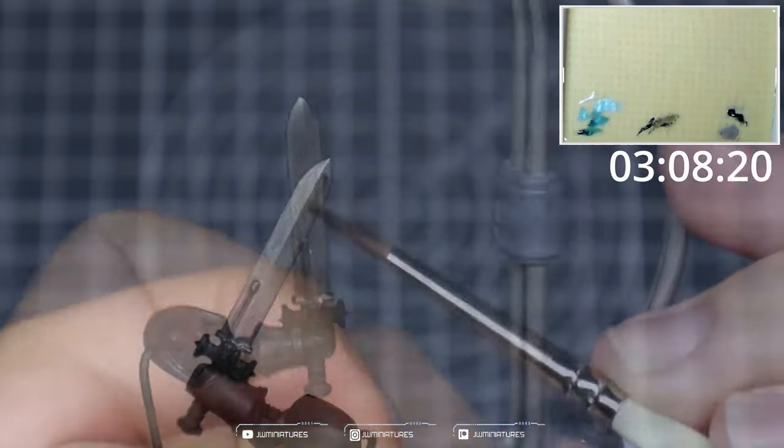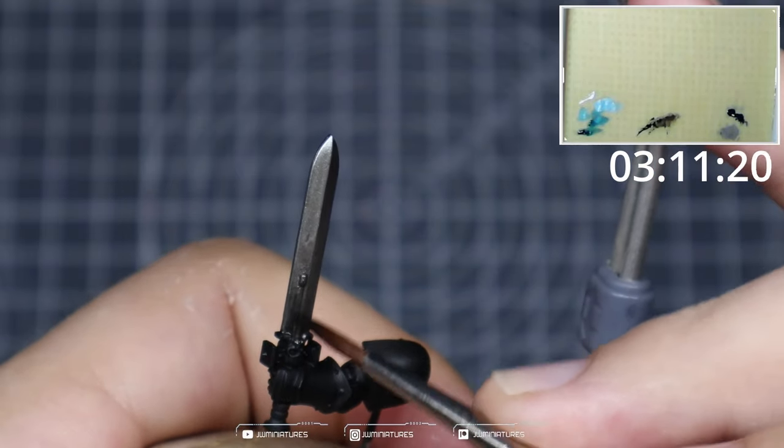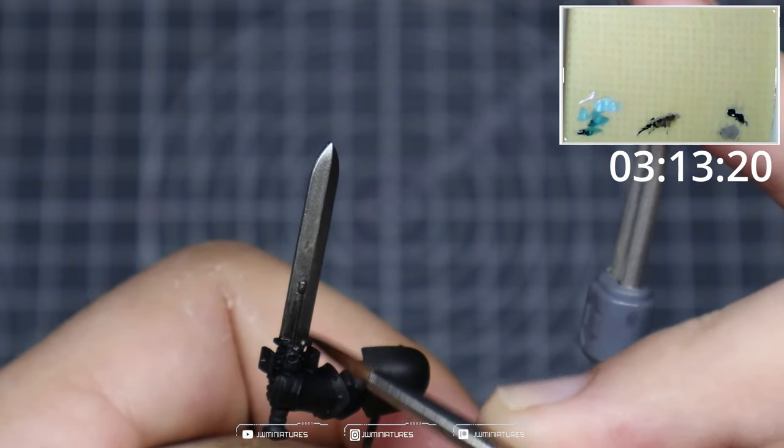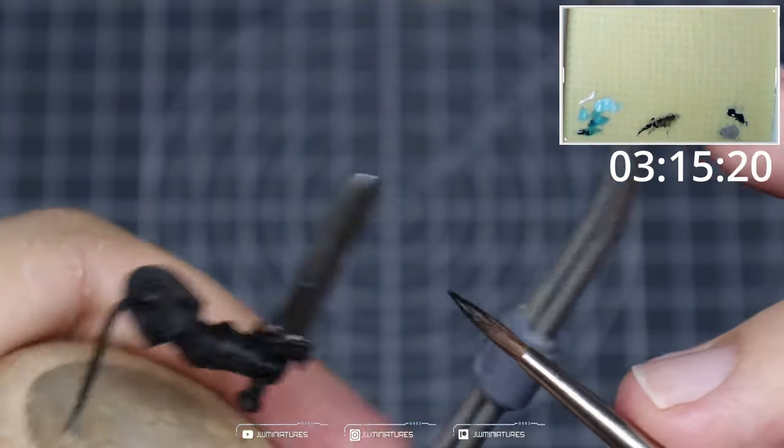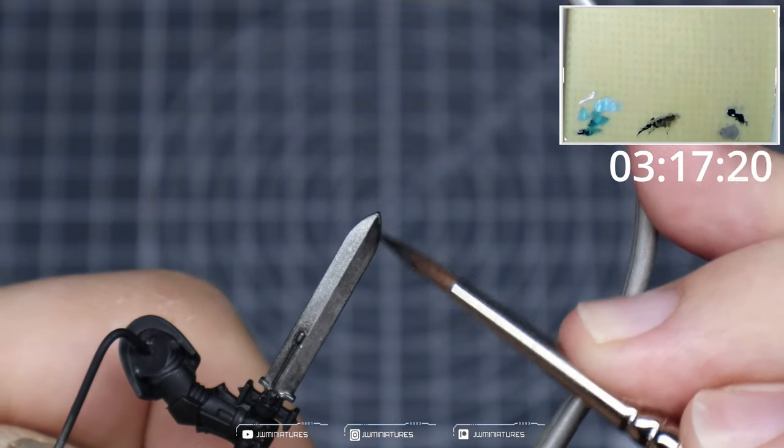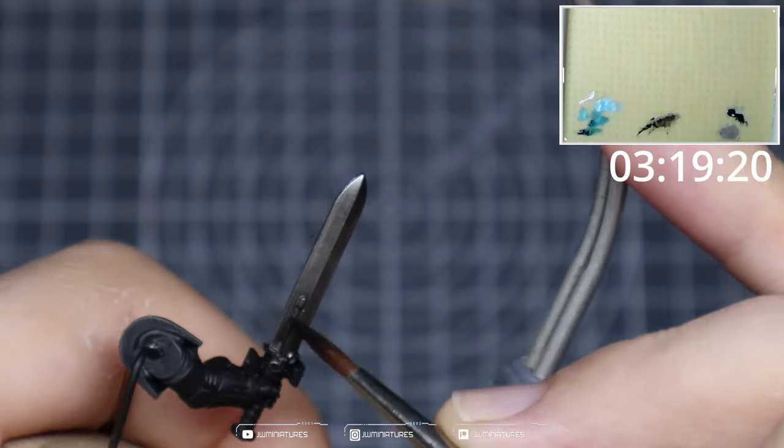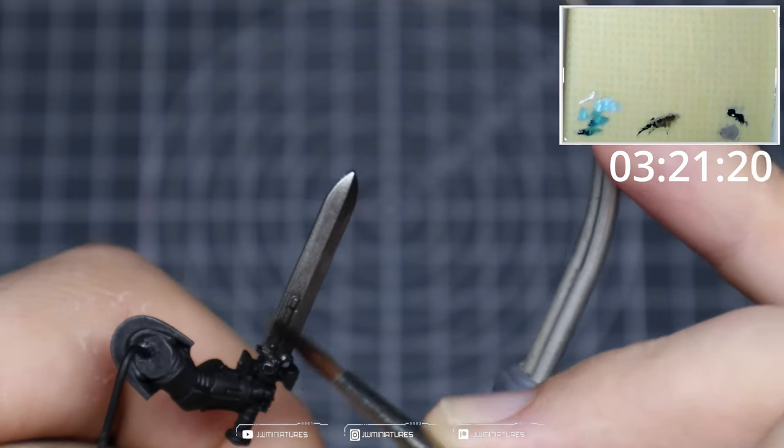You'll see that the initial pass is very light and then as we continue to build this gradient and cover slightly less area with each glaze, we start to create this transition from light into dark. And again this gives you that true metallic look to your sword.